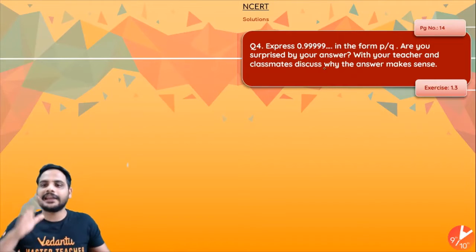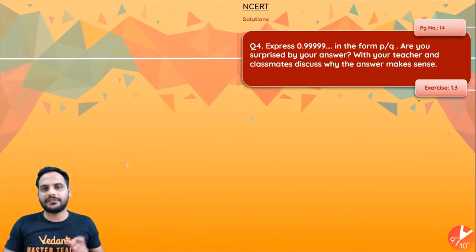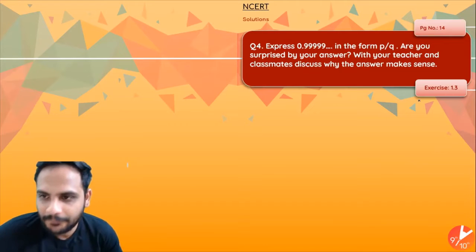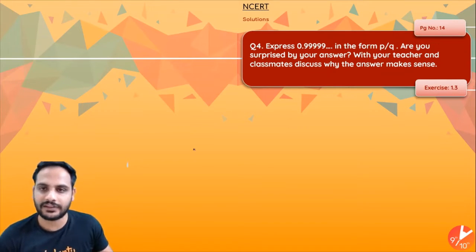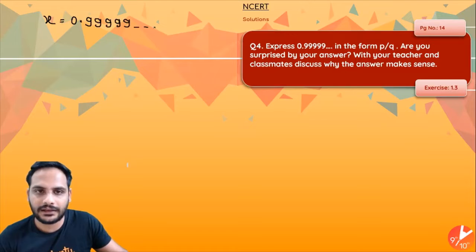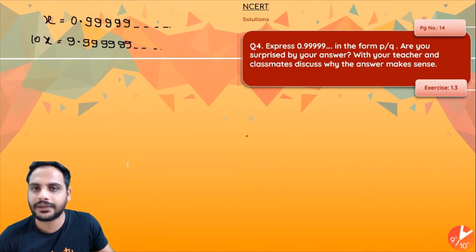Question 4: Express 0.9999... in the form p/q. Are you surprised by your answer? Discuss why the answer makes sense with your teacher and classmates. So let x = 0.9999... and so on. I will multiply by 10, so 10x = 9.9999... — let's call this equation 1 and equation 2.